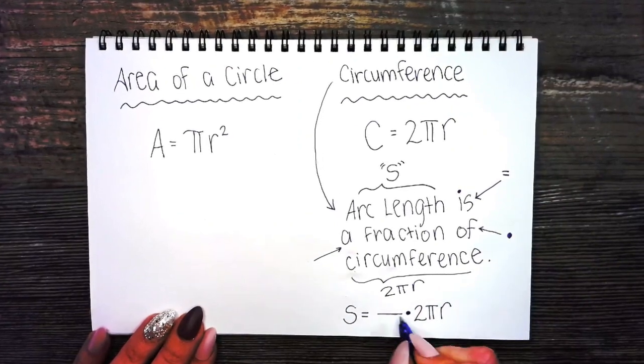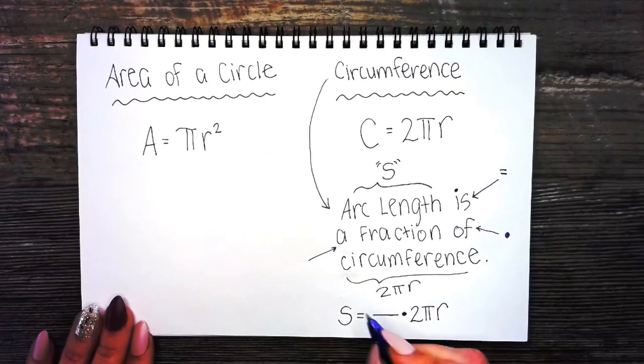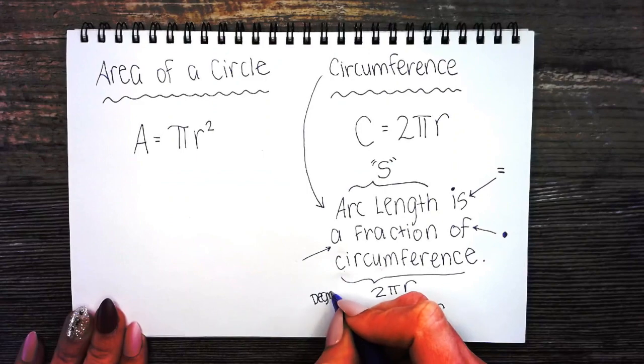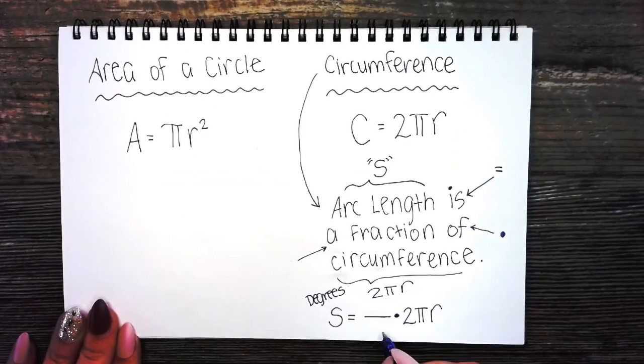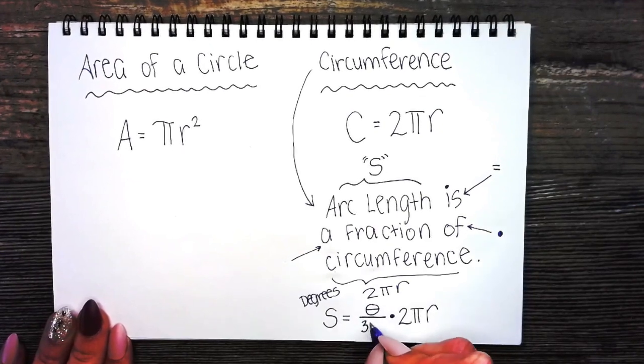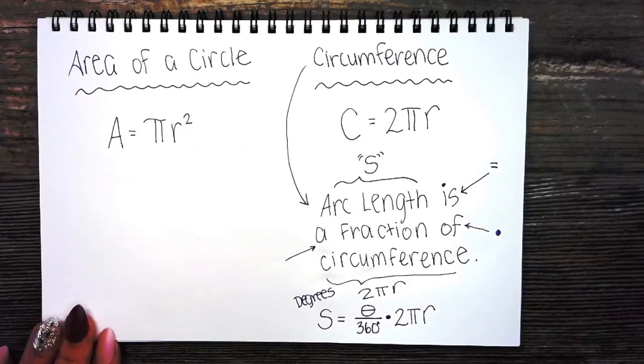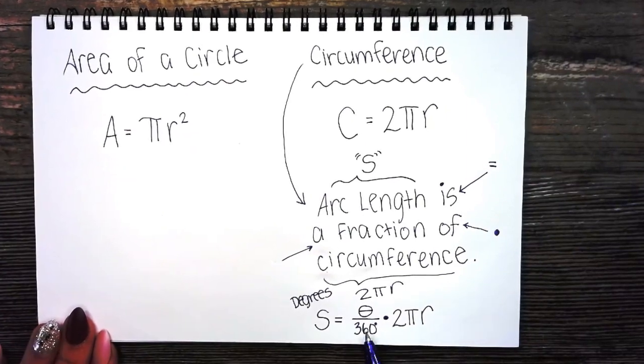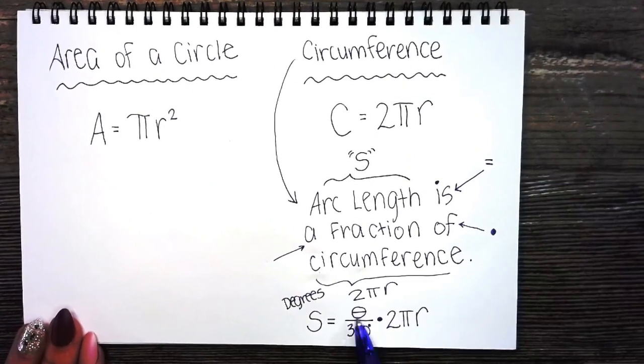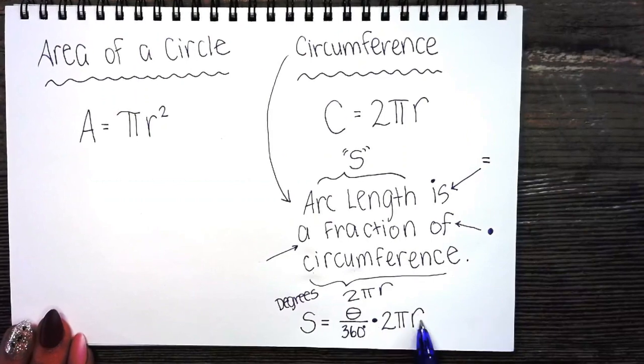What fraction are we talking about? If we're dealing with a problem in degrees, the fraction would be theta over 360 degrees. If you had a 30 degree angle, you would look at 30 over 360 as the fraction of the circumference.